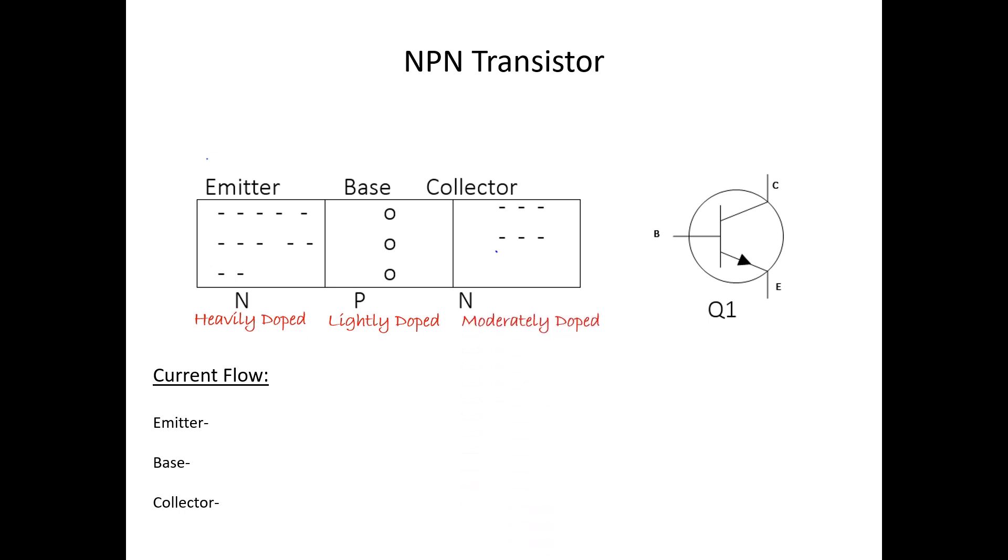And the collector, moderately doped in N-type material, or electrons. A transistor has two requirements needed for it to conduct, or for it to allow current flow.